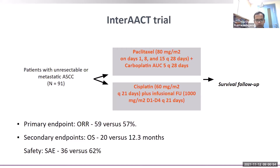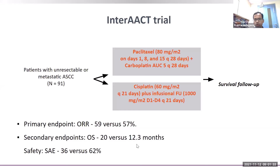A recently published trial randomized 91 metastatic patients to paclitaxel-carboplatin versus standard 5-FU and cisplatin. The primary endpoint — overall response rate — failed to show improvement: 59 versus 57 percent. However, the secondary endpoint of overall survival favored paclitaxel-carboplatin: 20 months versus 12.3 months with 5-FU/cisplatin. Serious adverse events were also less — 36 percent versus two-thirds. Weekly paclitaxel was given on days 1, 8, and 15 with carboplatin AUC5 every 28 days.